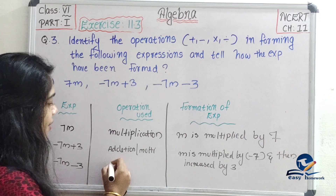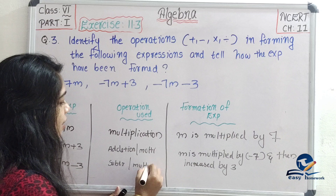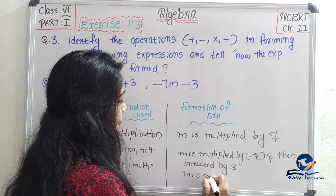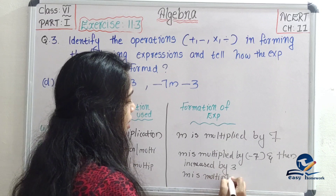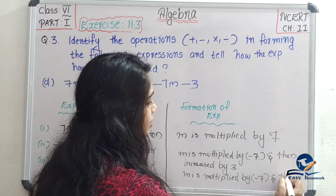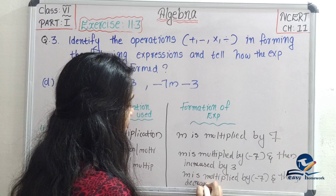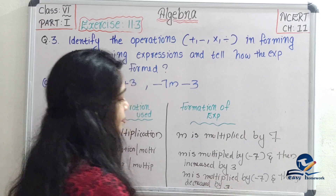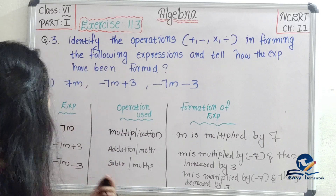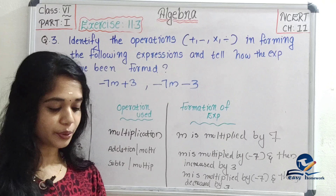This involves subtraction, multiplication, and operations. Here we can write: m is multiplied by minus 7 and then decreased by 3. So the expressions are 7m, minus 7m plus 3, and minus 7m minus 3.